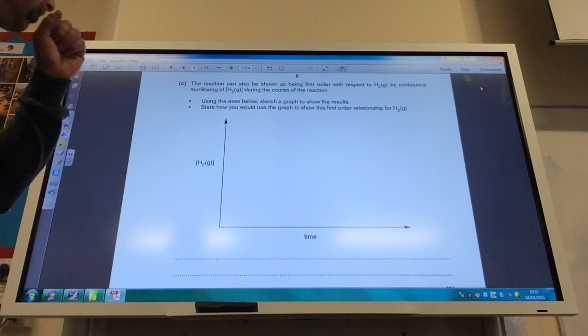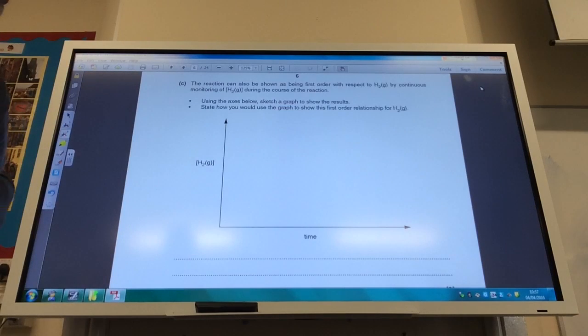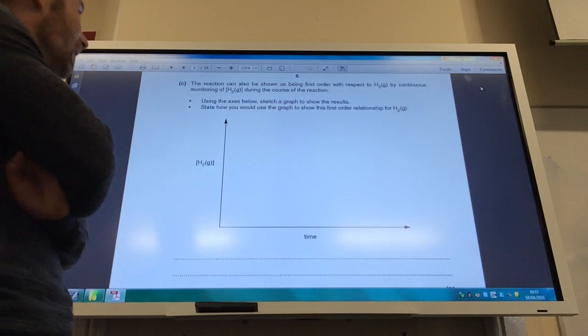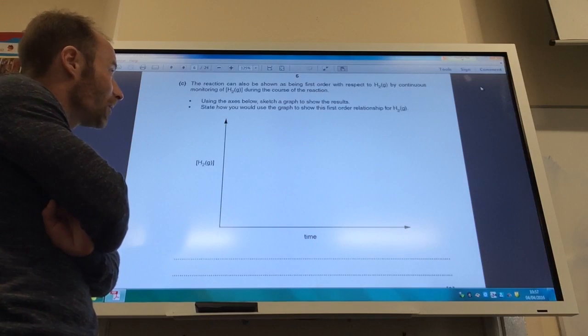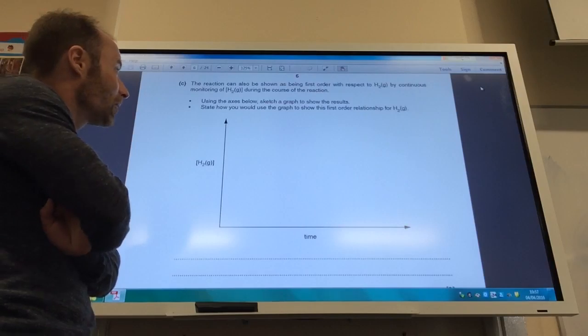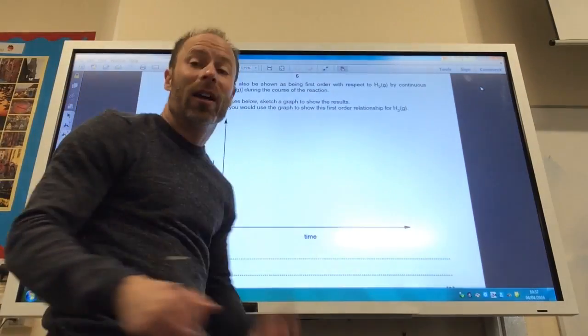Okay, carrying on then. The reaction can also be shown as being first order with respect to H2 by the continuous monitoring of concentration of H2 during the reaction. Using the axes below, sketch a graph to show the results and state how you would use this graph to show it's first order.